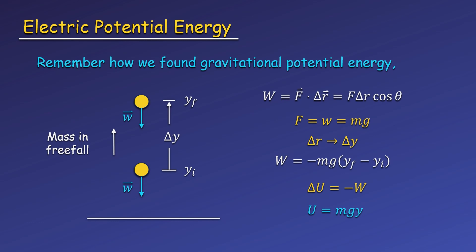So we say that mgy is the potential energy of the mass above the Earth, but technically potential energy is a property of a system of at least two objects since it comes from internal interactions. In this case, the mass and the Earth make up our system, and they interact internally through gravity.